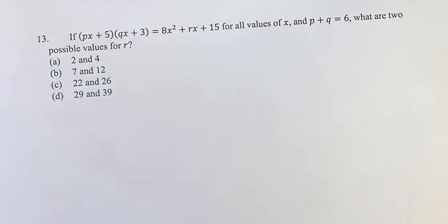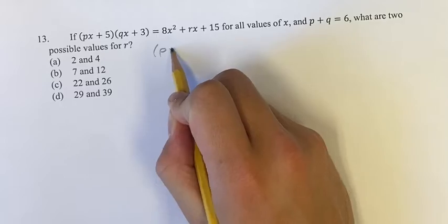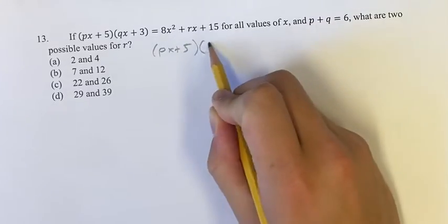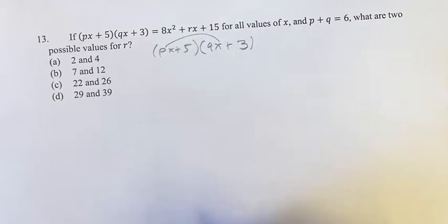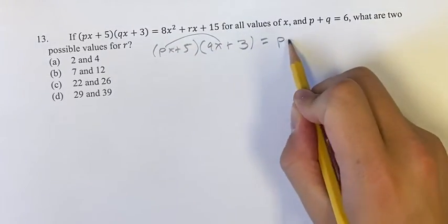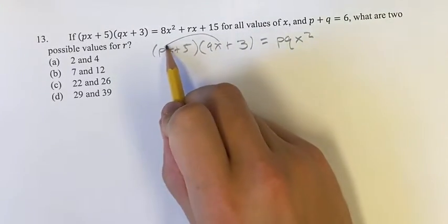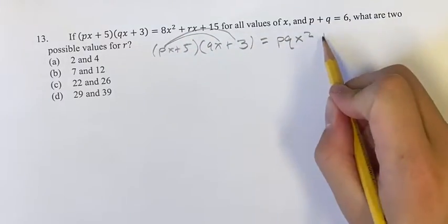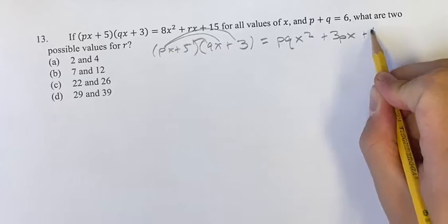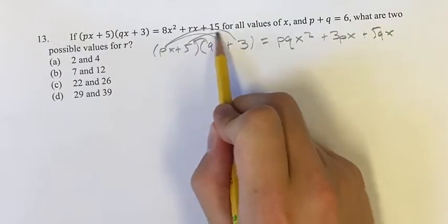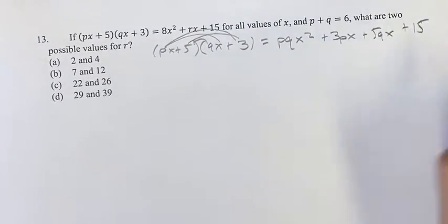So if we just FOIL this out right here it'll make it easier to compare these two. So (px + 5)(qx + 3), we're going to multiply the first of both which gives us pqx² the outer plus 3px the inner plus 5qx the last of both, 5 times 3 is 15.